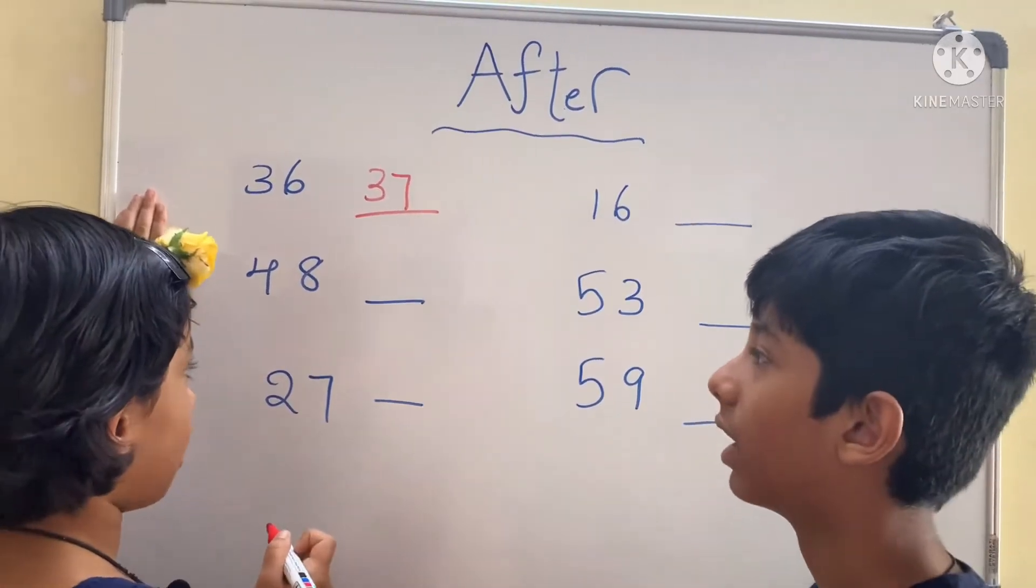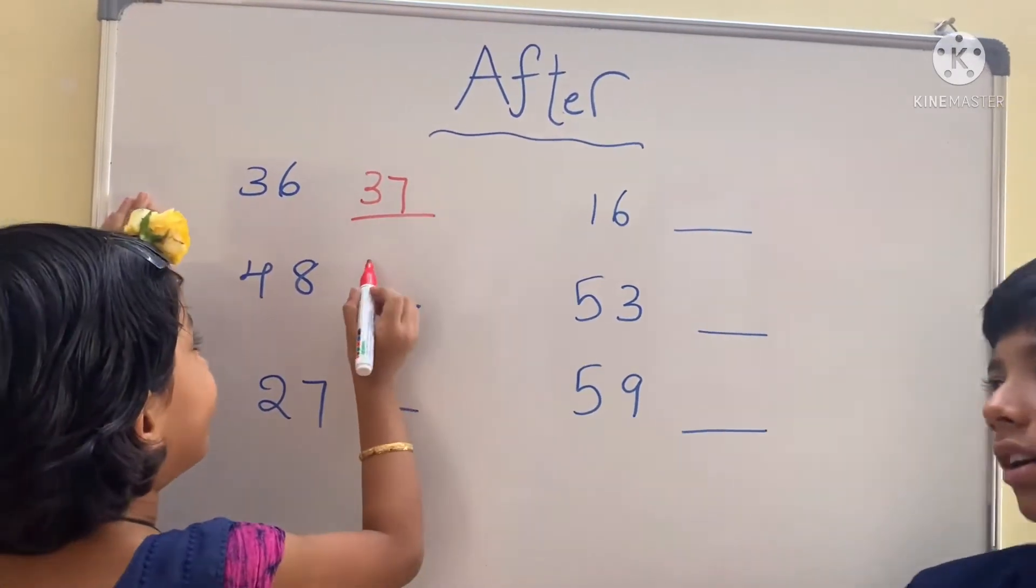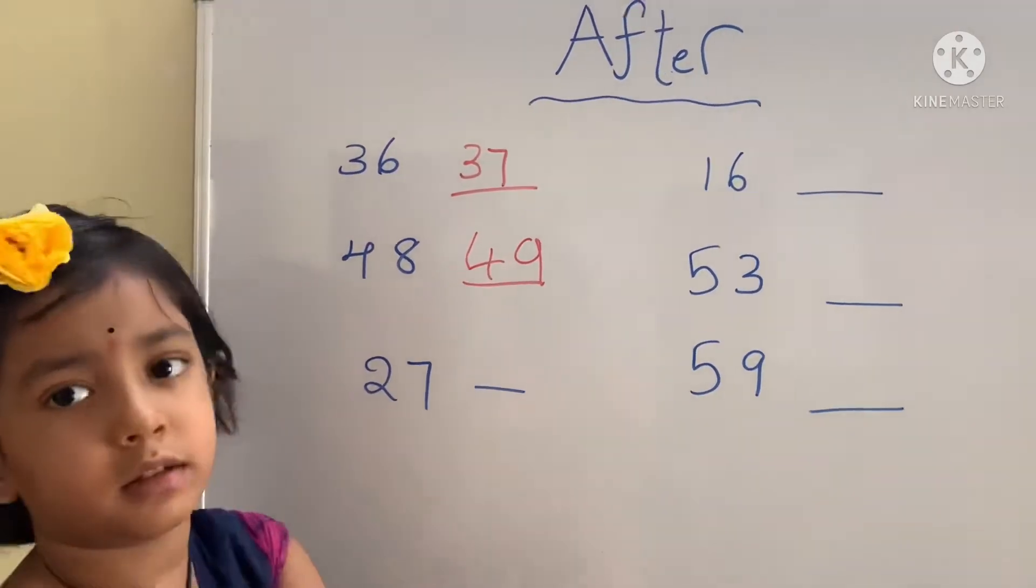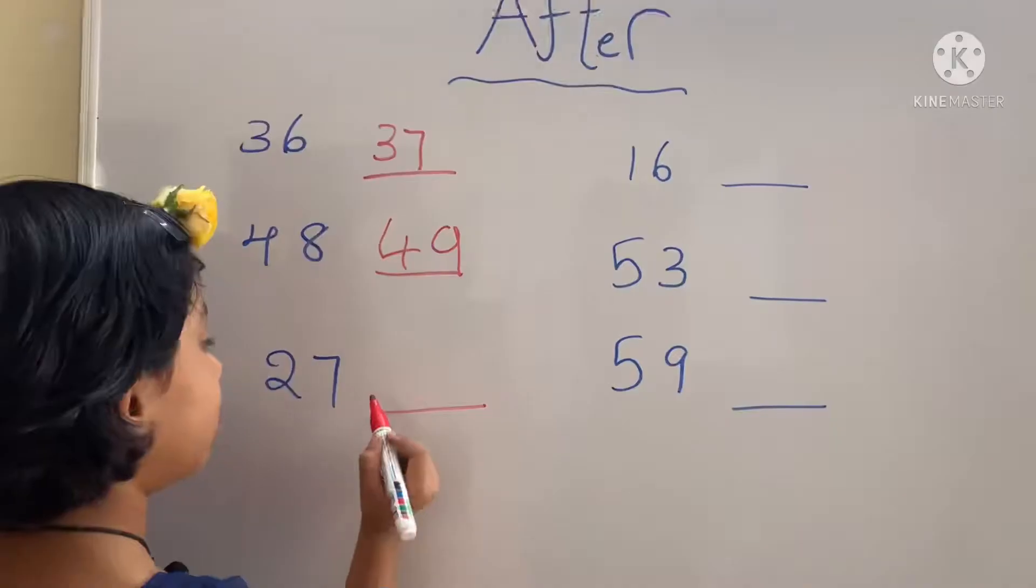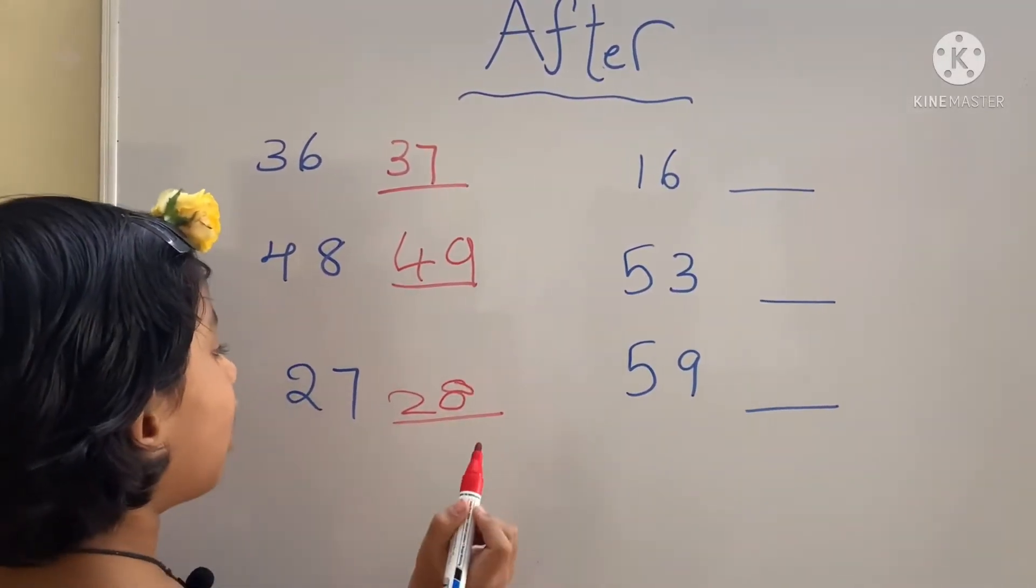What number comes after 48? Four tens, nine ones, 49. What number comes after 27? Two tens, eight ones, 28.